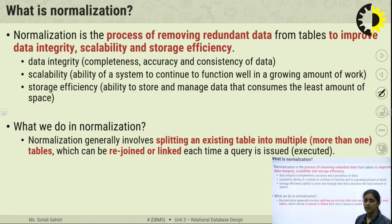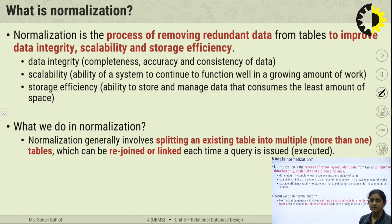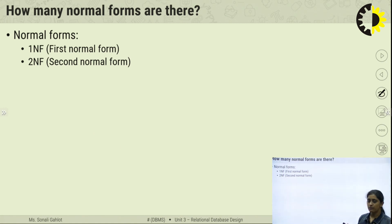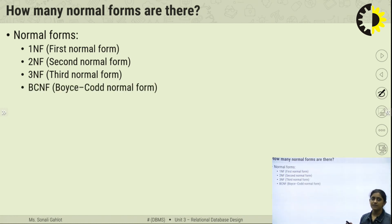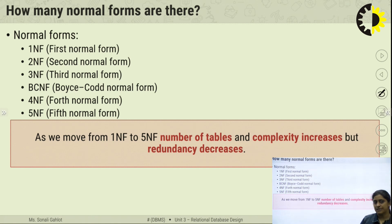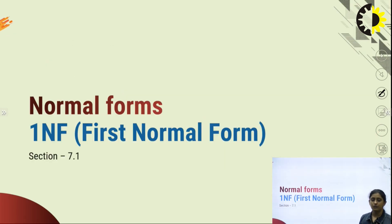Normalization generally involves splitting the existing table into multiple tables which can be rejoined or linked at query time. When a table has anomalies, we split it into two or three tables depending on the condition, to remove all anomalies. There are several normal forms: First Normal Form (1NF), Second Normal Form (2NF), Third Normal Form (3NF), BCNF (Boyce-Codd Normal Form), Fourth Normal Form, and Fifth Normal Form. As we move from 1NF to 5NF, the number of tables and complexity increases, but redundancy decreases.